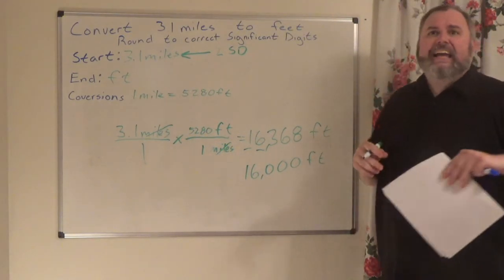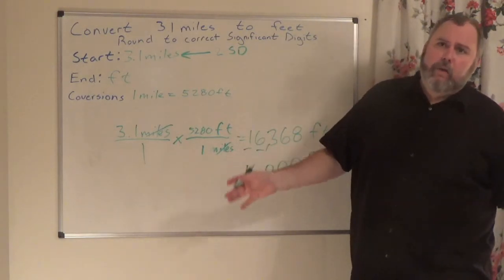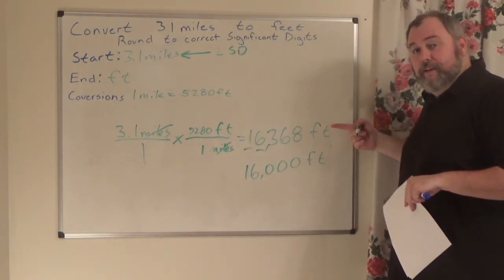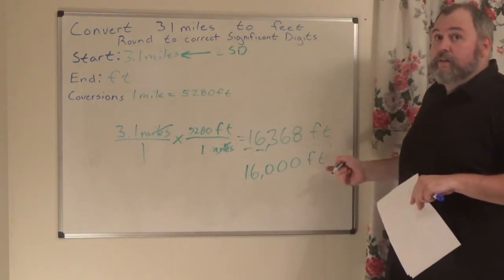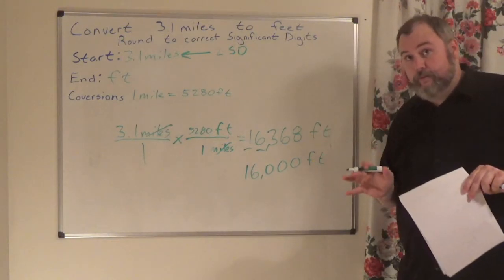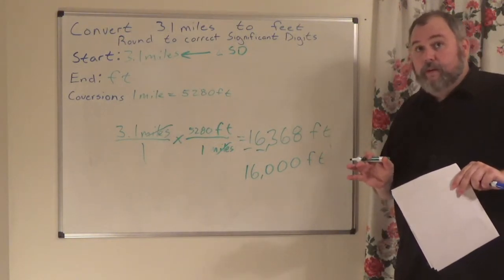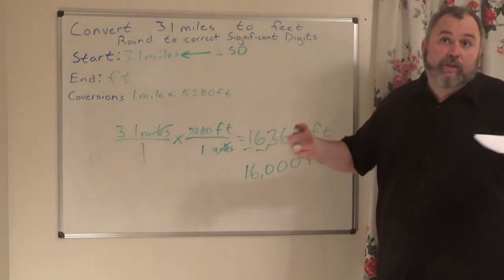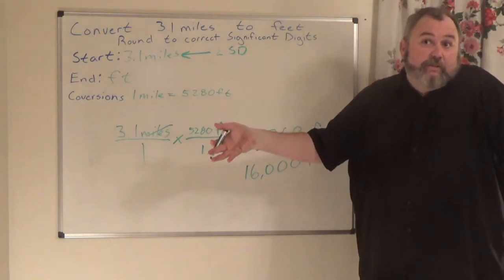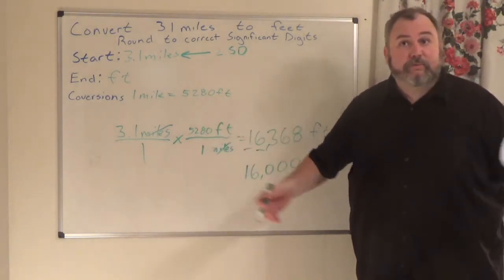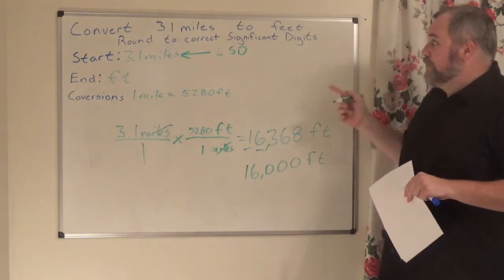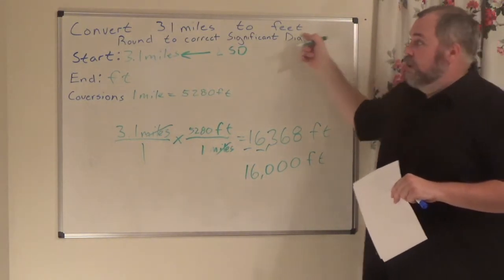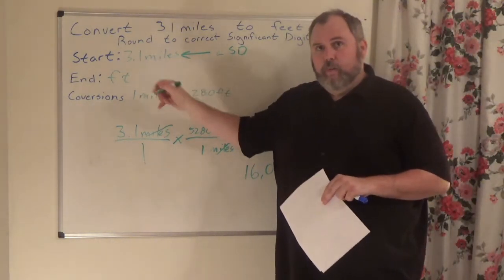I can tell you to round any way I want to, so as long as you've got the original process, the rounding at the end should be straightforward. I can tell you to round to the nearest thousands, hundreds, tens, ones, or any decimal place. But for this case, significant digits — so we just look at what we started with.